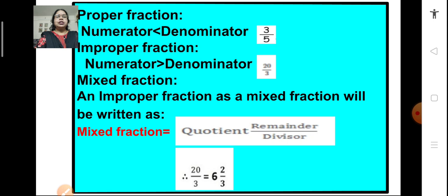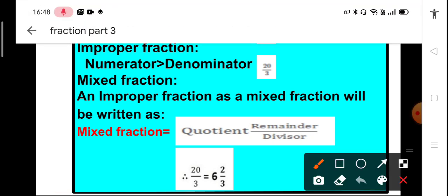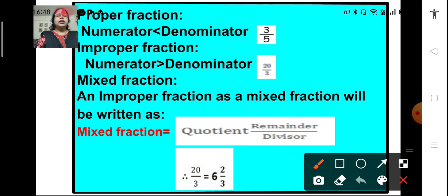What are proper fractions? When the numerator of the fraction is less than the denominator, then it is called a proper fraction. We have an example here: 3 upon 5. And what is an improper fraction? When the numerator is greater than the denominator, then the fraction is an improper fraction. For example, 20 upon 3.